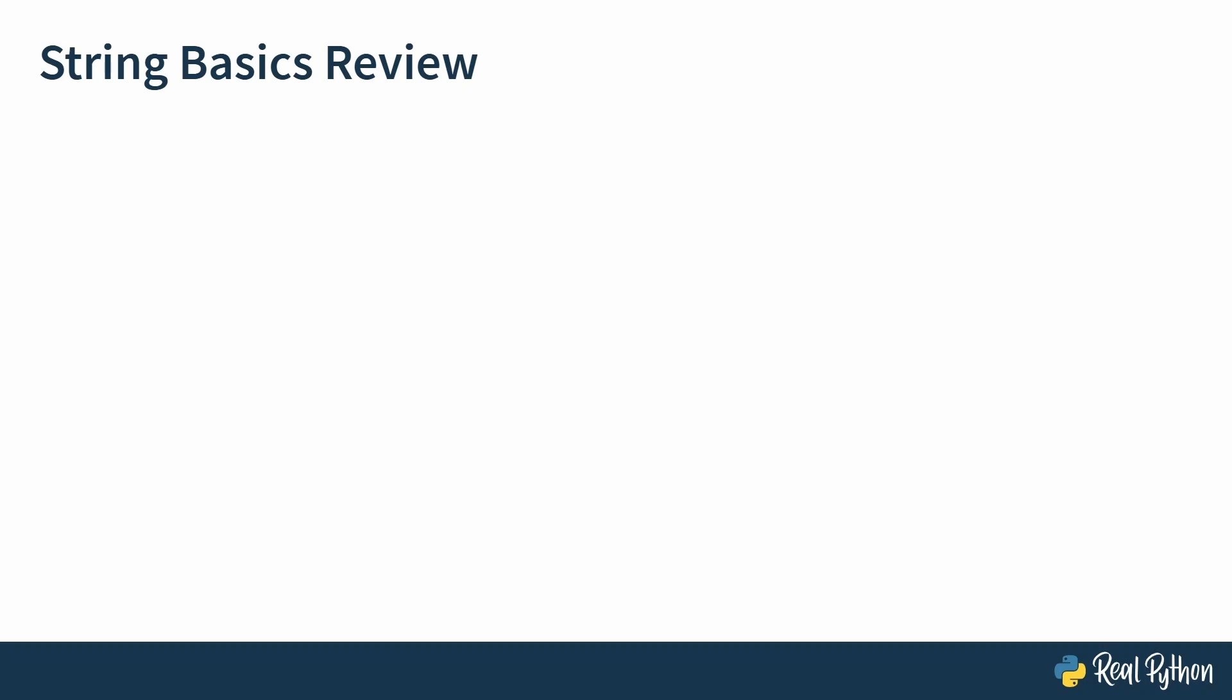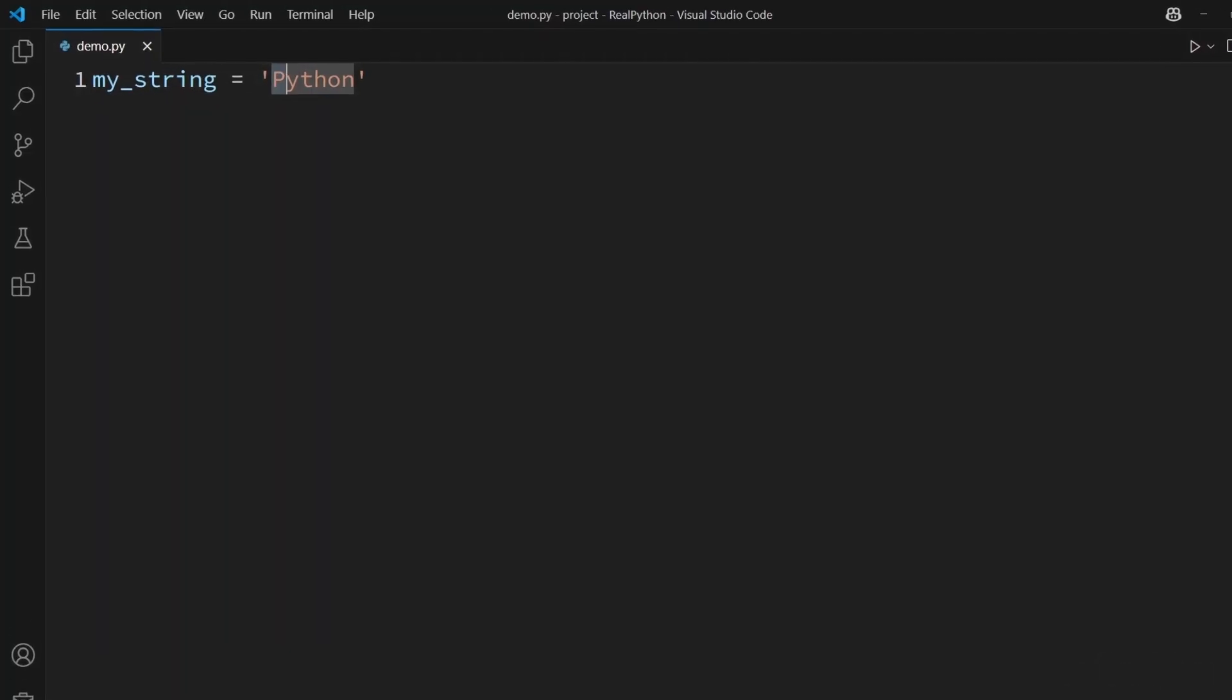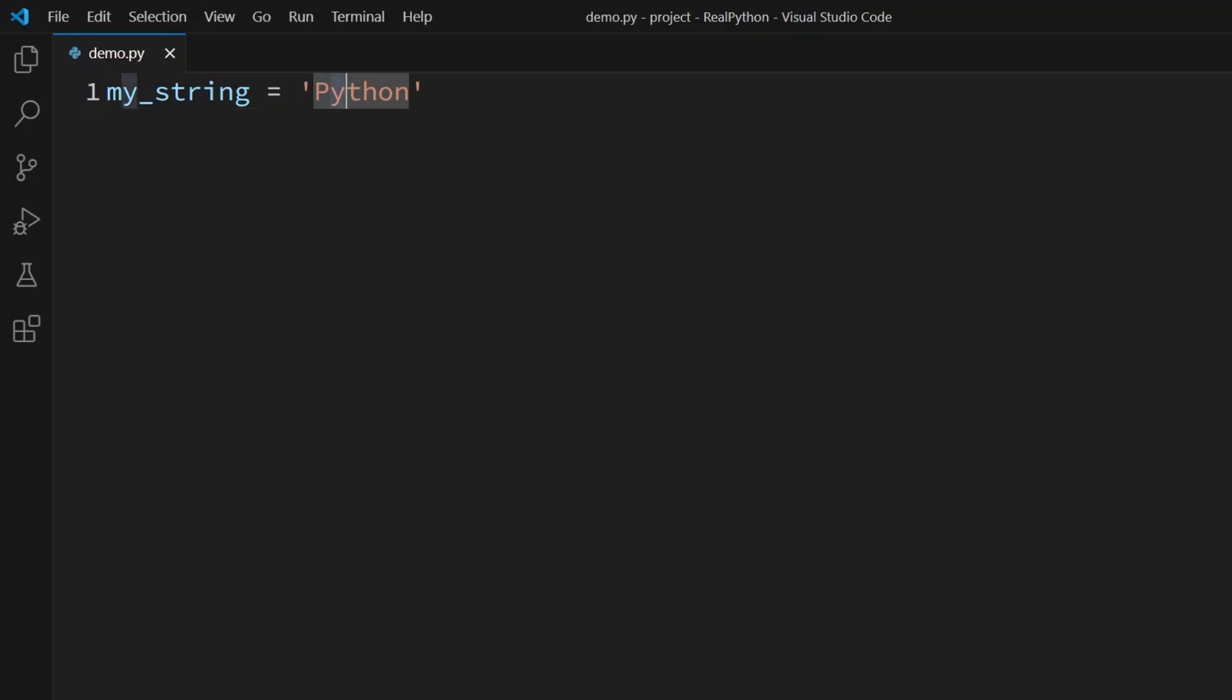Let's quickly recap two key ideas about strings. First, strings are sequences of characters. This means that characters in a string have a defined order and you can access individual characters or ranges of characters using their position. For example, in the string Python, P is at index 0 and Y is at index 1 and so on. Second, this sequential nature is fundamental to how many string operations, including splitting, work internally.